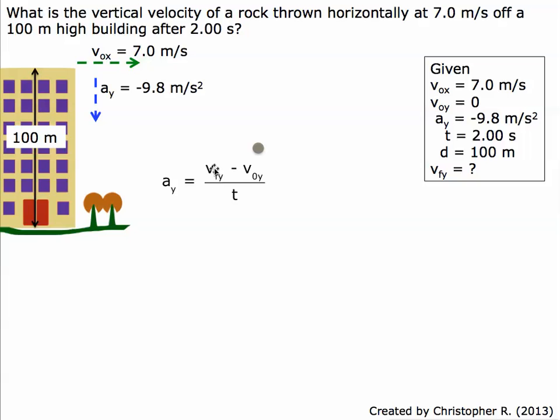First, we need to isolate the variable. We'll multiply both sides by t, and the t's on the right side will cancel out. Then we get ta equals vf minus v0.